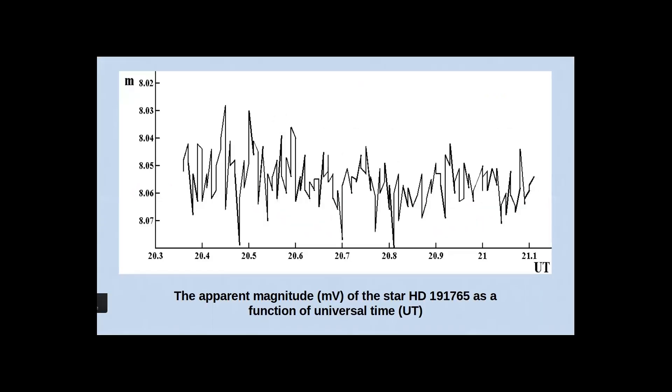We also investigated the short periodic variability of this star. This is another work. We use material from two years ago. Here you see one day's material from June. As you can see from this graphic, apparent magnitude changes between 8.3 and 8.7. We use approximately 150 photos for one night. This was also done in V filter.